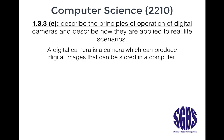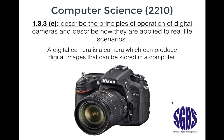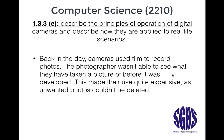Digital cameras are pretty easy because most people have them. A digital camera is a camera which can produce digital images that can be stored in a computer — it could be a standalone camera, or a phone, tablet, or computer. Back in the day, cameras used film to record photos, so the photographer wasn't able to see what they had taken a picture of before it was developed. This made their use quite expensive as unwanted photos couldn't be deleted.